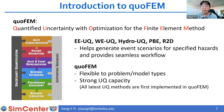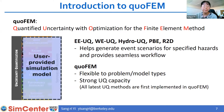Other tools focus on helping users generate event scenarios for specific hazard types and provide seamless workflows. quoFEM, on the other hand, is not limited to certain hazard types. All the puzzle pieces are given by the user as a single simulation model — we call it FEM, but it's not limited to FEM. Any computational model can be plugged in as this puzzle piece. It's flexible to problem and model types. All the latest UQ methods in SimCenter are first implemented in quoFEM and then propagated into other tools, so quoFEM always has the strongest UQ capacity.